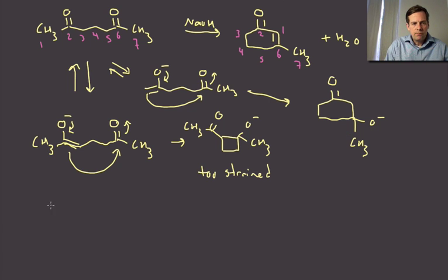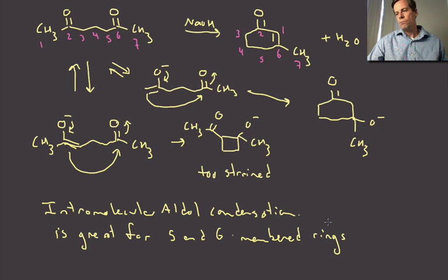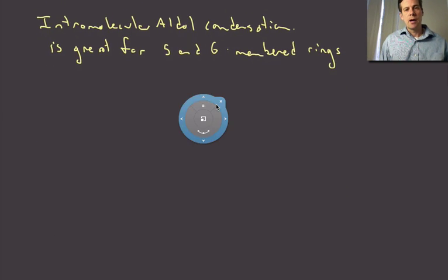So the intramolecular aldol condensation is great for forming five and six membered rings. Okay. So if you can do one of those ring formations, things are probably going to work out.